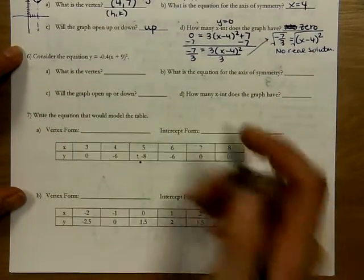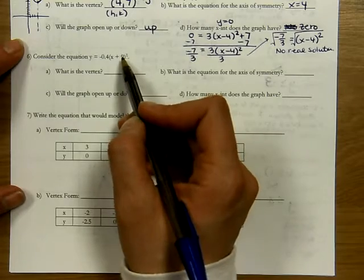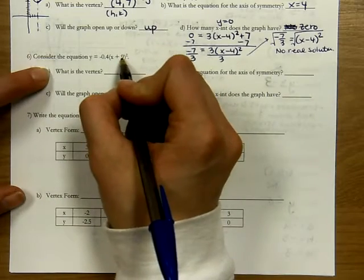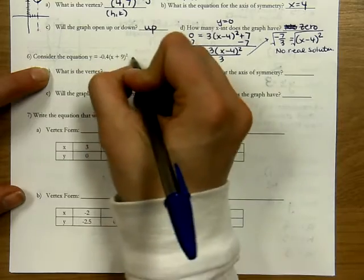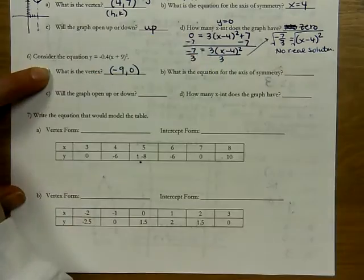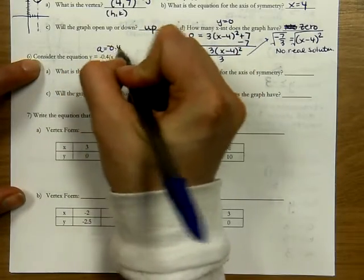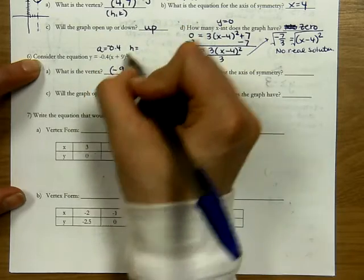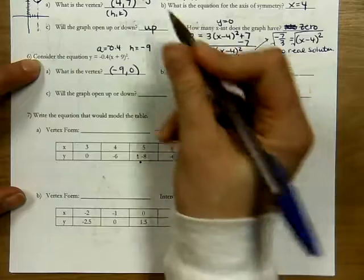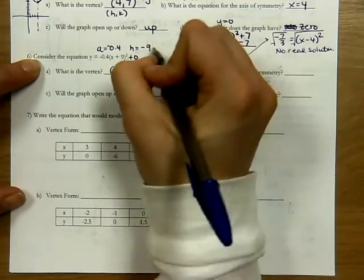The next function is also in vertex form. The plus 9 inside translates it left 9, and there's no constant added at the end, so the vertex is at negative 9 comma 0. The a value is the coefficient out front; h is negative 9 (since we're subtracting negative 9 from x); and k equals 0.